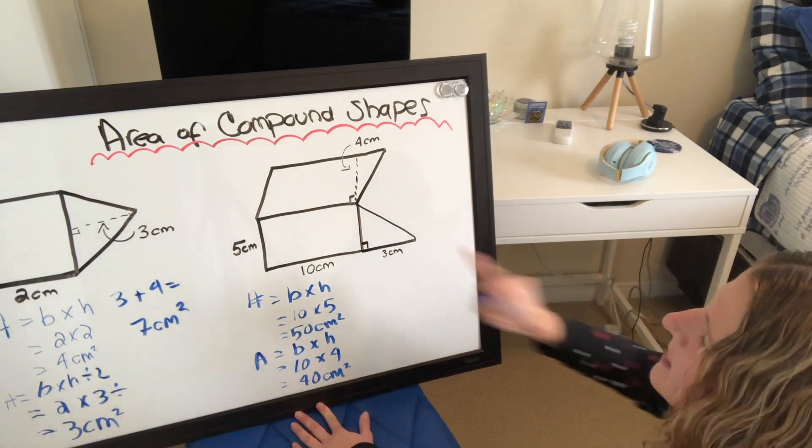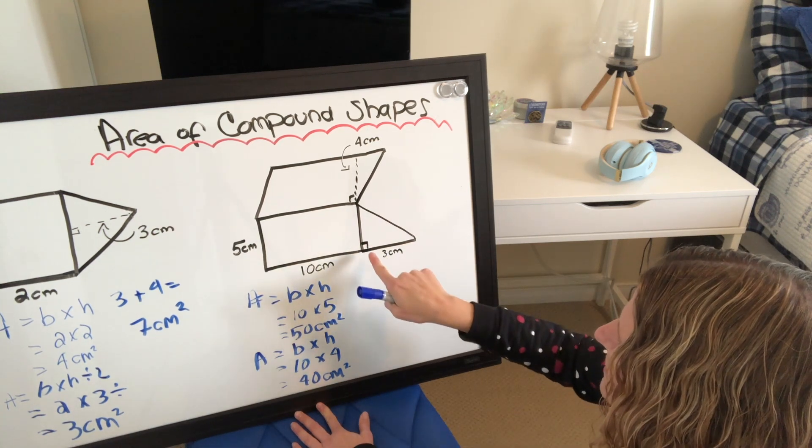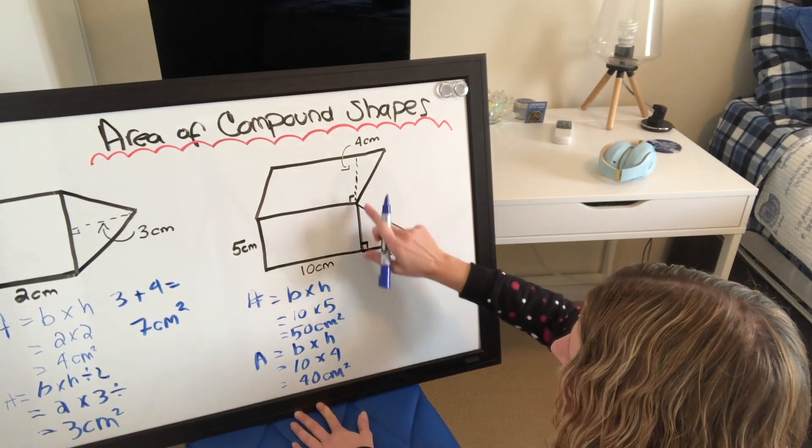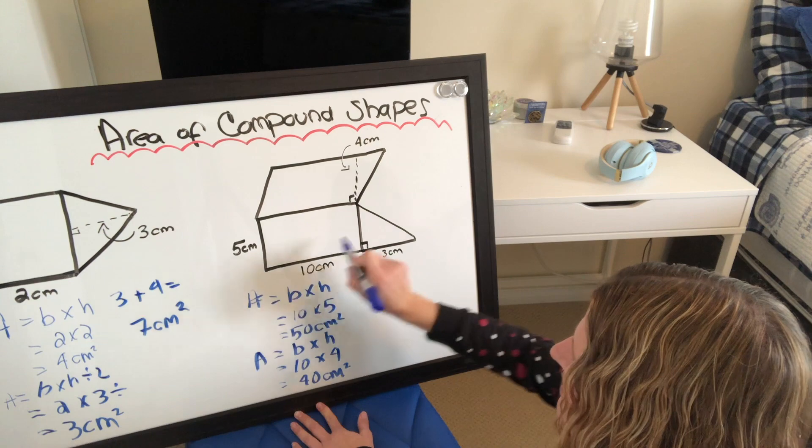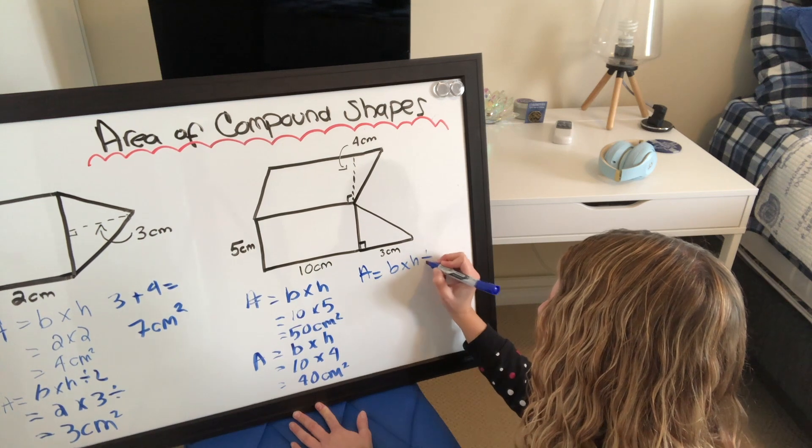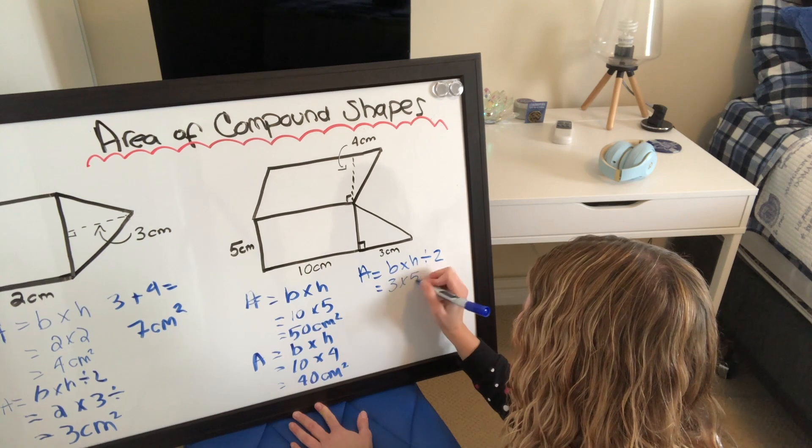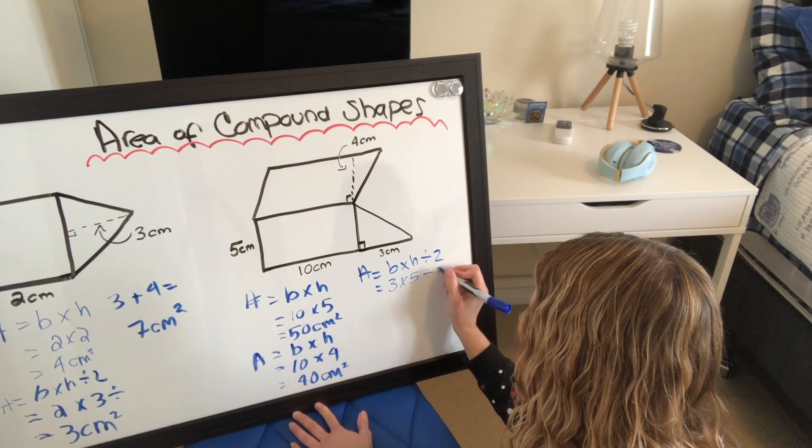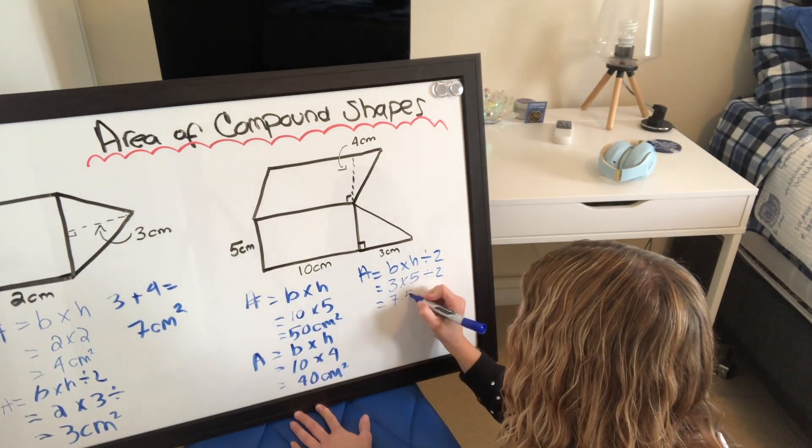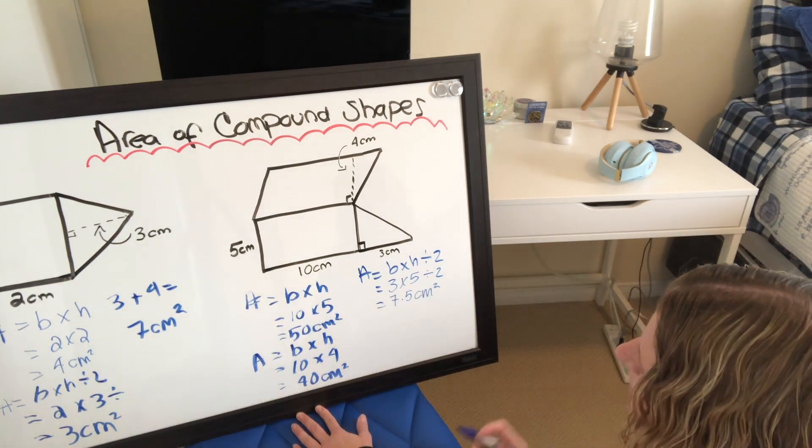And now finally, let's do that little triangle. And I can see that this is a right angle triangle because it's got that little hypotenuse right there, that little square guy. So I know that this is the height. This one is the height. So that would be 5 centimeters. Area equals base times height divided by 2, which would be 3 times 5 divided by 2. So 3 times 5 is 15. 15 divided by 2 is 7.5 centimeters squared.